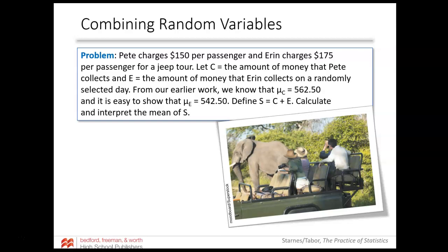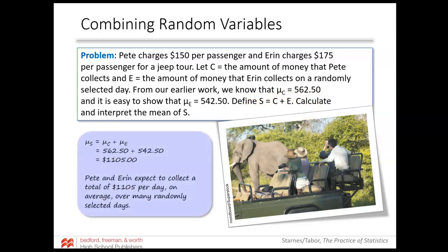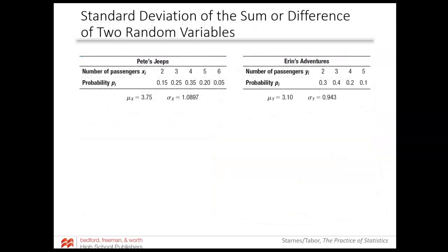Pete charges $150 per passenger and Erin charges $175 per passenger. Let C be the amount Pete collects and E be the amount Erin collects. From earlier work, the mean of Pete is $562.50 and Erin's mean is $542.50. To find the mean of C plus E, we just add the expected values together, giving an expected value of $1,105. The interpretation: Pete and Erin expect to collect a total of $1,105 per day on average over many, many randomly selected days.